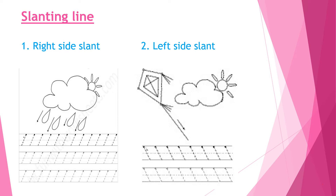So children, for the right slanting line, we will start from the top red line. In the English notebook we have four lines — top line is red, two lines are blue, and the last line is red. Starting with the top red line, bring your pencil down till the second blue line.